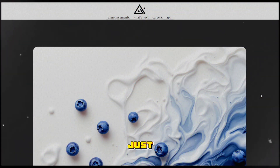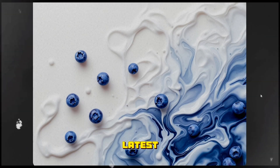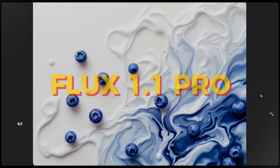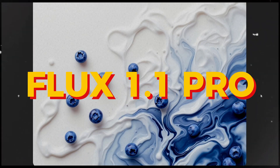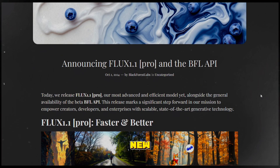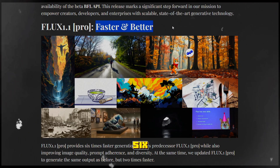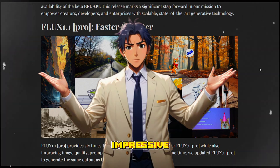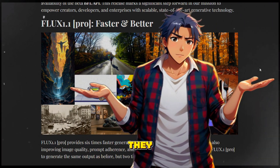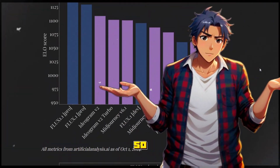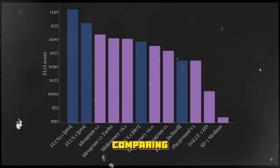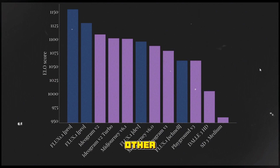Black Forest AI has just announced its latest update, Flux 1.1 Pro. Here's what you need to know about this new model: Flux 1.1 Pro generates images six times faster than the previous Flux 1 Pro. And here are some benchmark results comparing it with other image generation models.